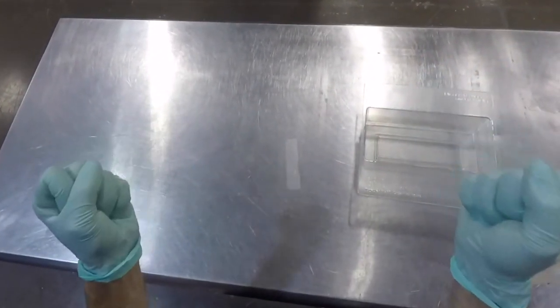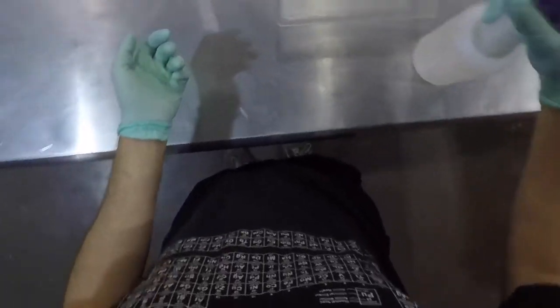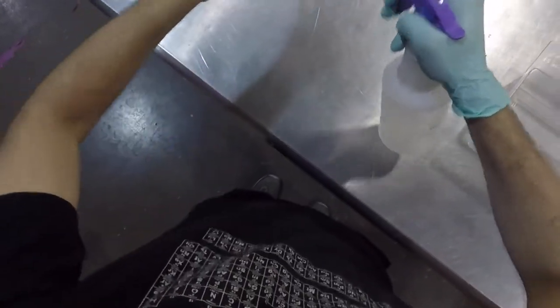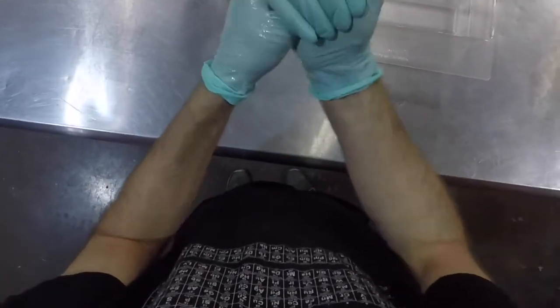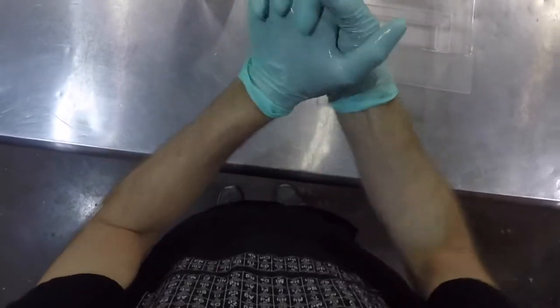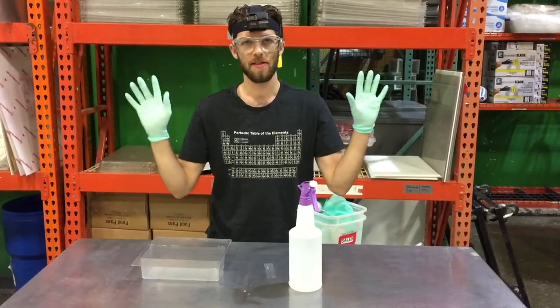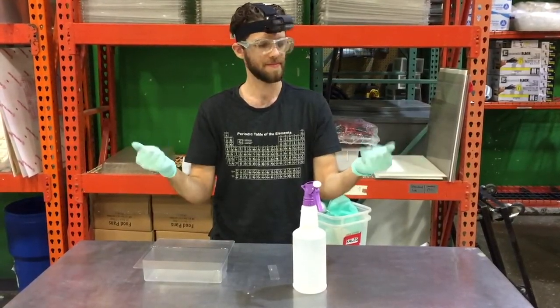When you're ready to start touching your mycelium, it's really important that you make sure your hands are also sterile. So what you want to do is spray down, rub all the creases, and now you just want to let it air dry for a couple seconds. Then you're ready to touch the mycelium. Let's go.